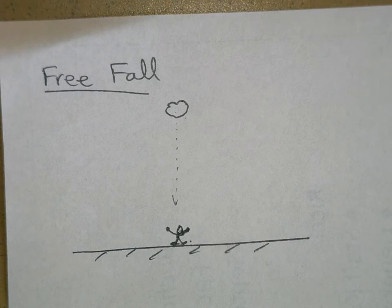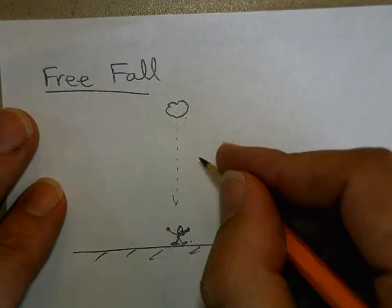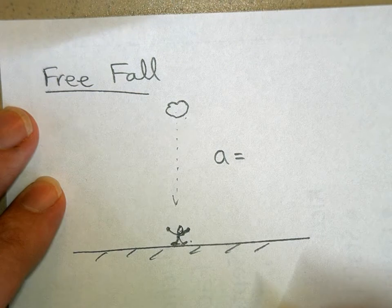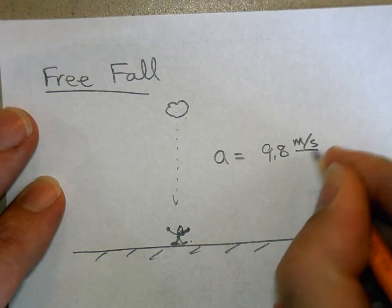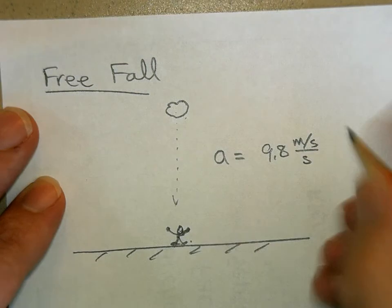And the acceleration, if you stay close to the Earth's surface, and by close to the Earth's surface, I mean within about 50 miles of the Earth's surface, it's going to be this. The acceleration is going to be equal to 9.8 meters per second every second in a downward direction.